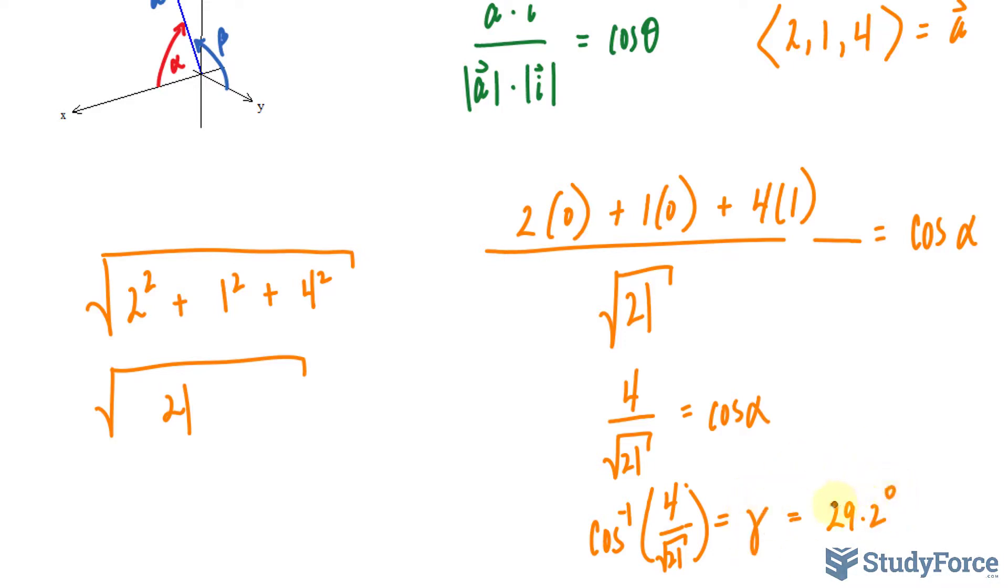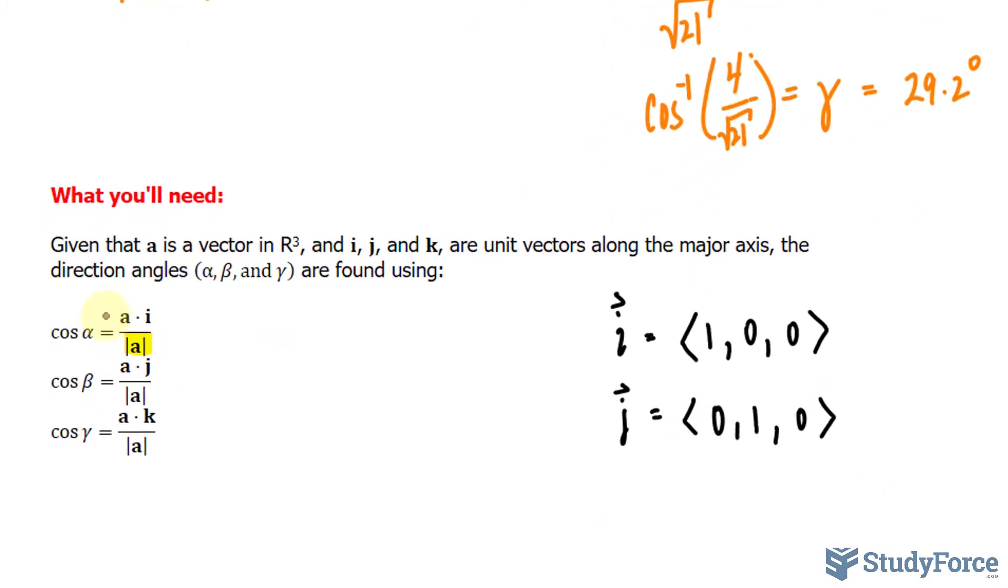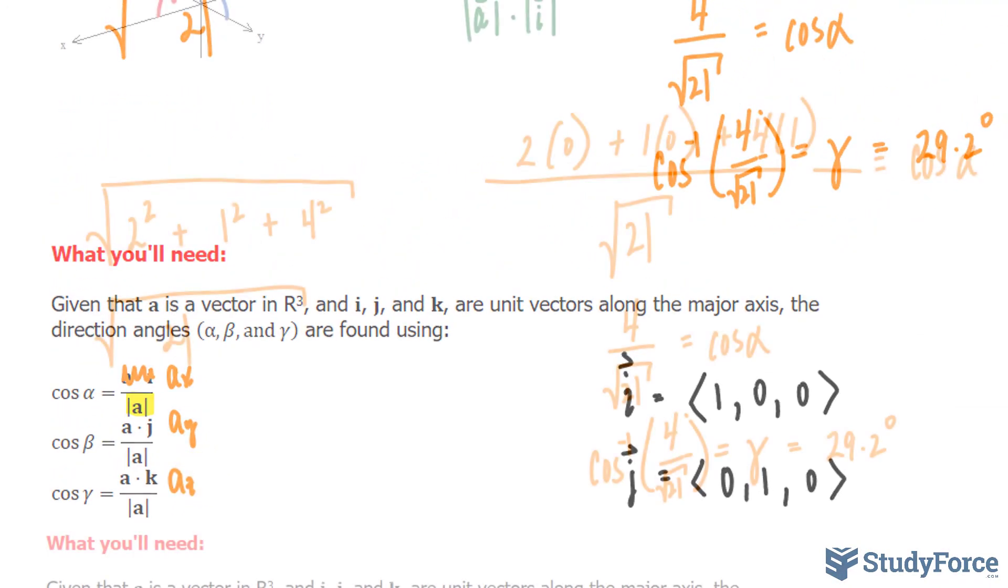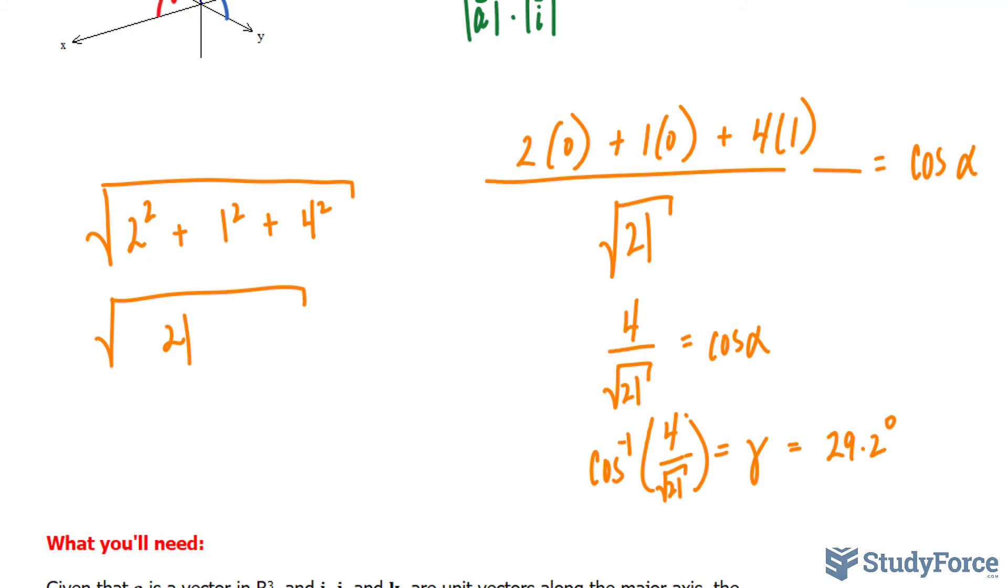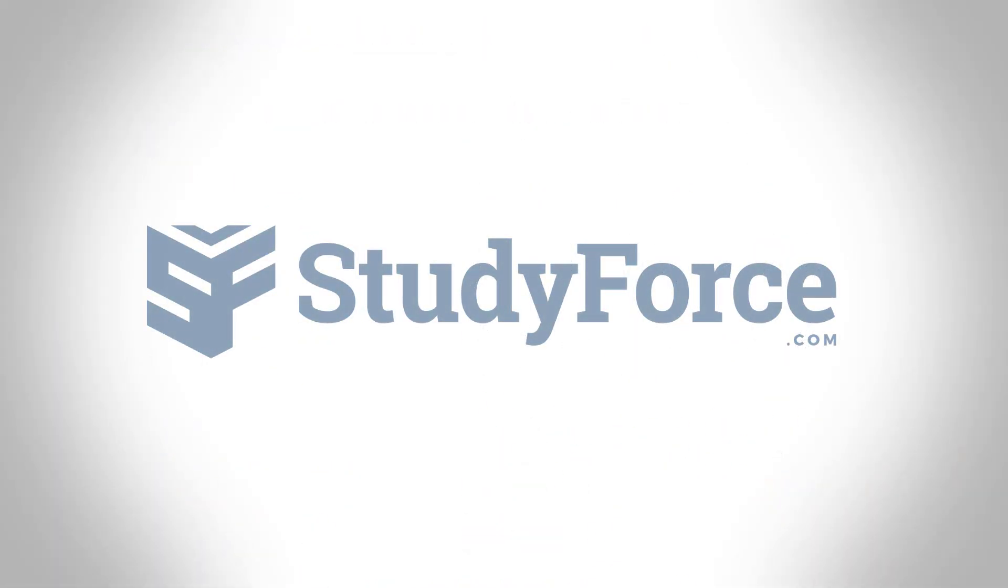Therefore, the vector makes angles of 64.1 degrees, 77.4 degrees, and 29.2 degrees along the x, y, and z axes. To simplify these three formulas even more, this should only be the x component of a, that would be the y component of a, and finally the z component of a, as you noticed when we did the three calculations. And there you have it—that is how to find the direction angle of a vector in 3-space.